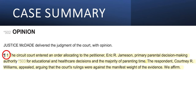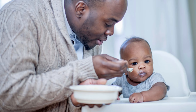The first paragraph says the circuit court entered an order allocating to the petitioner, Eric Jameson, primary parental decision-making authority for educational and healthcare decisions, and the majority of parenting time. The respondent, Courtney Williams, appealed, arguing that the court's rulings were against the manifest weight of the evidence. We affirm. So the lower court gave primary residential and legal custody to the father. The mother appealed, but the appellate court affirmed the lower court's decision. The rest of the case tells us why, which is what you need to know.